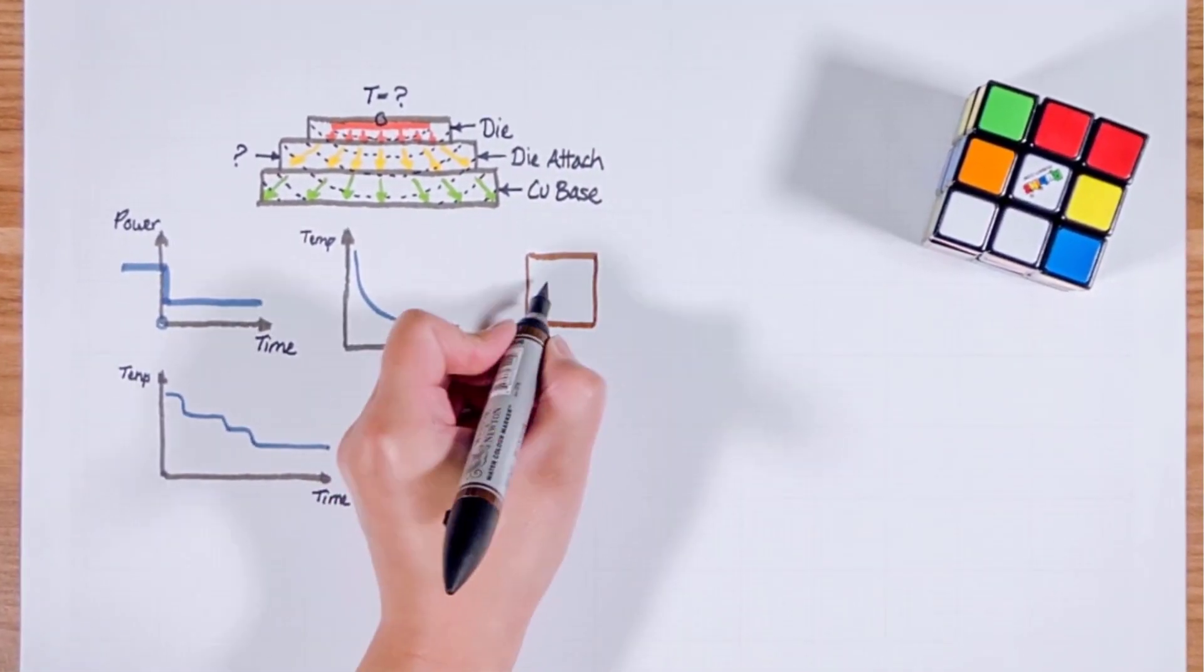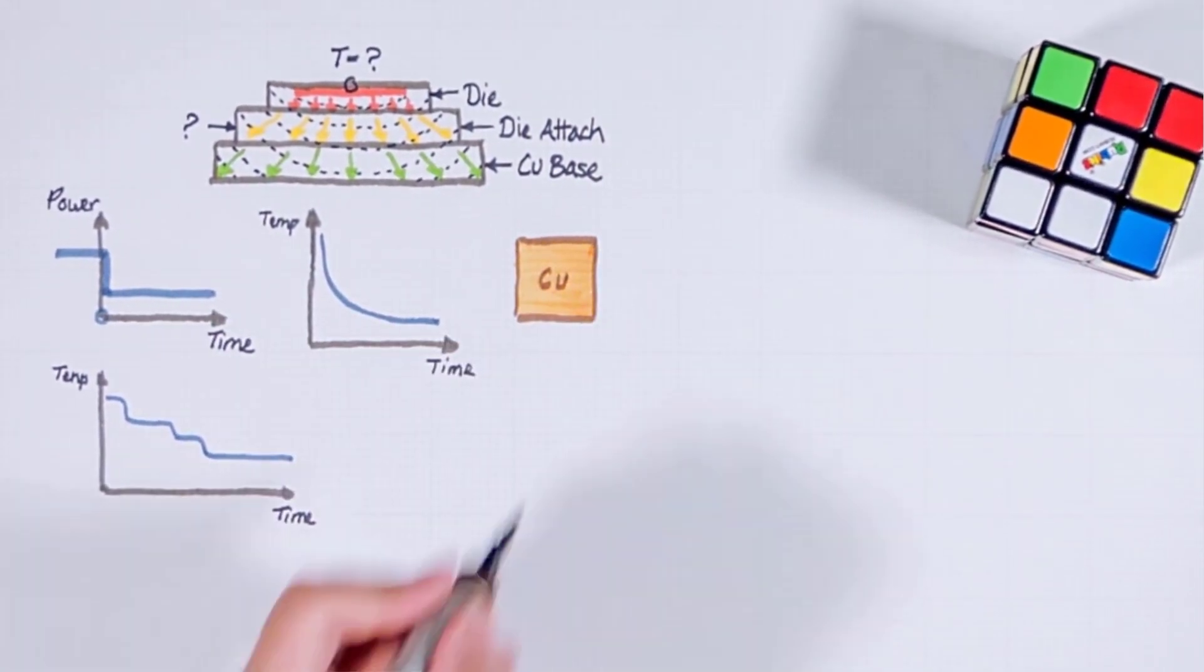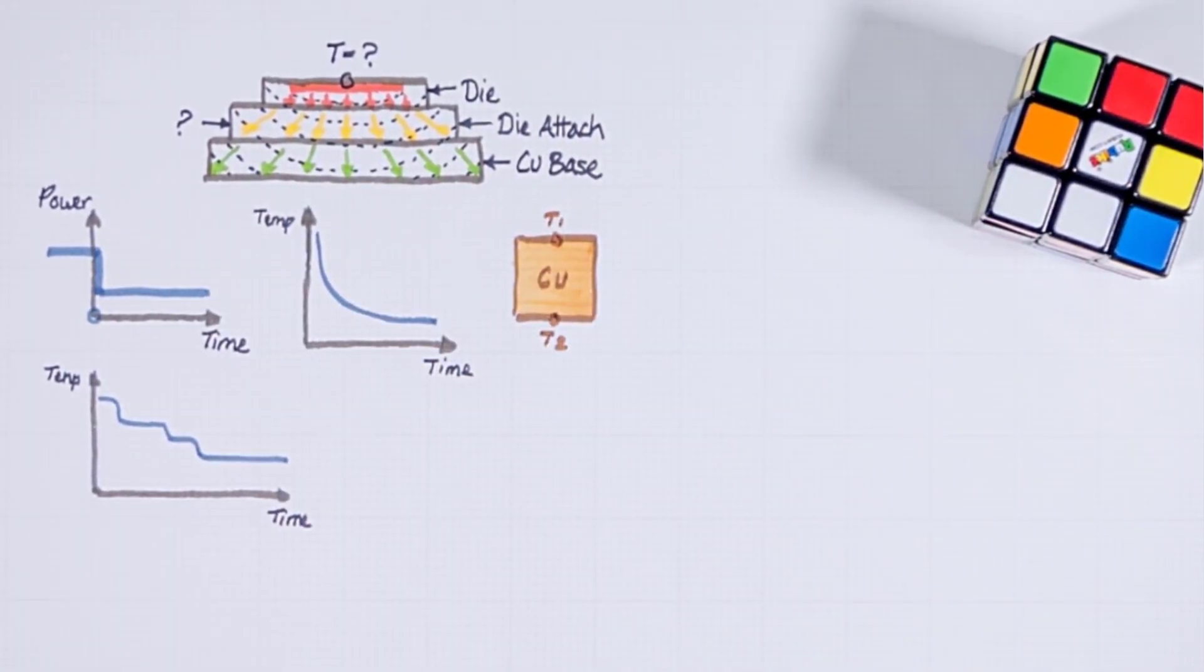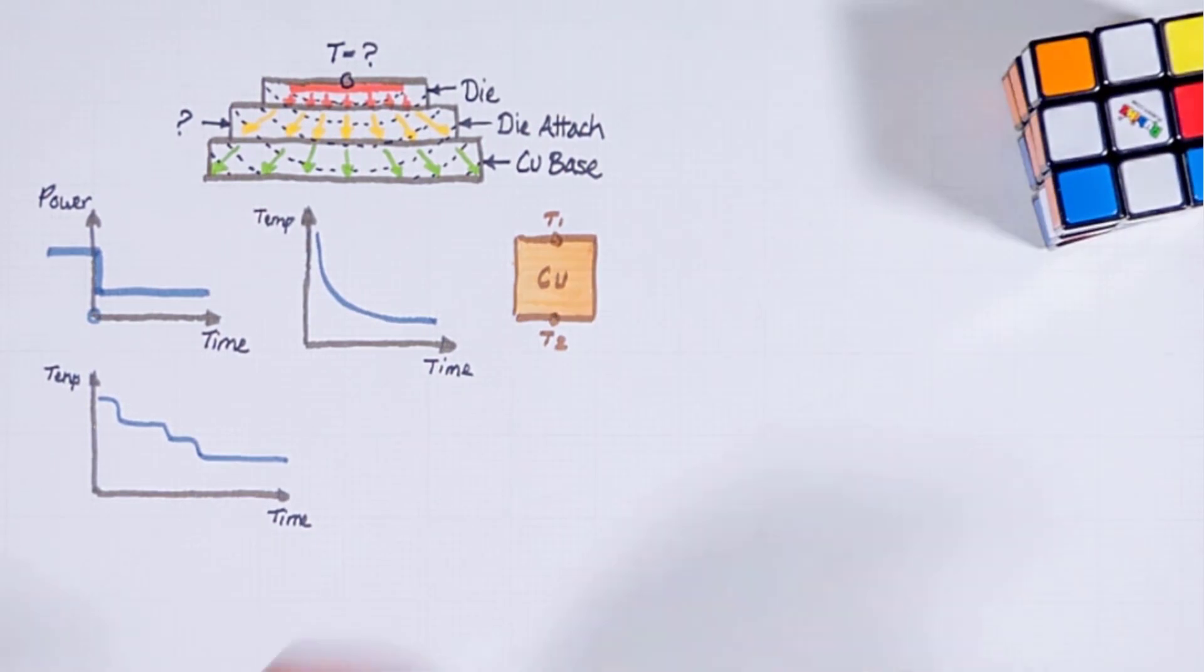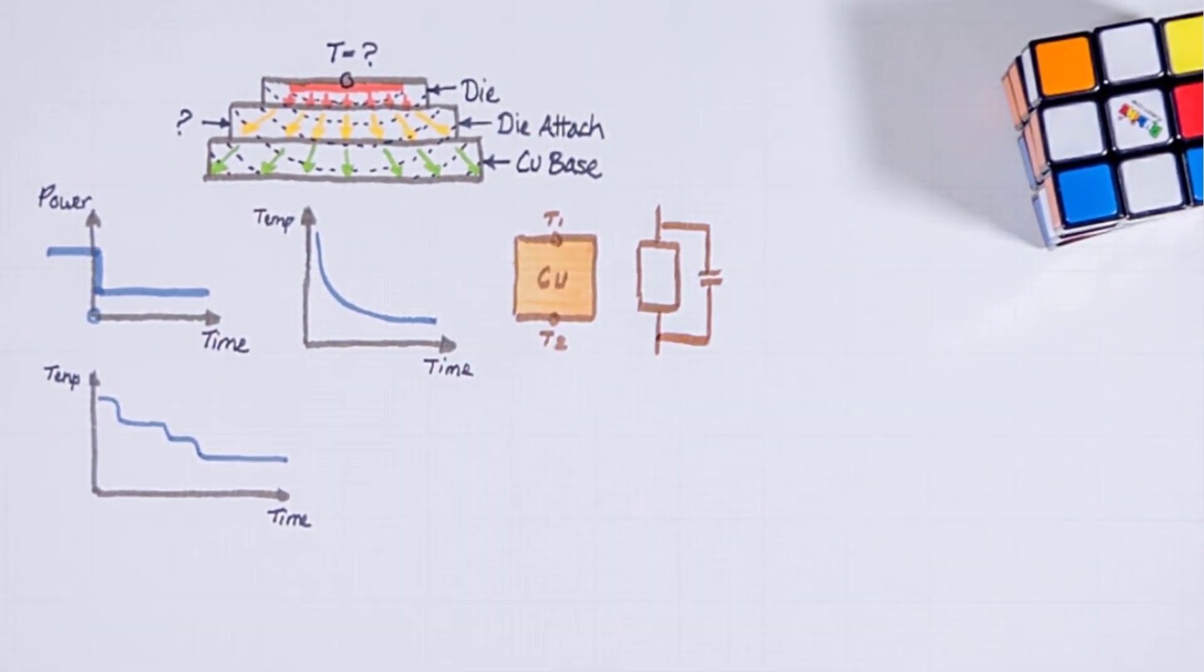If we have a simple structure for example just a block of uniform copper how can we describe it? The heat comes from the top. We can describe it with a thermal resistance and a parallel connected thermal capacitance.